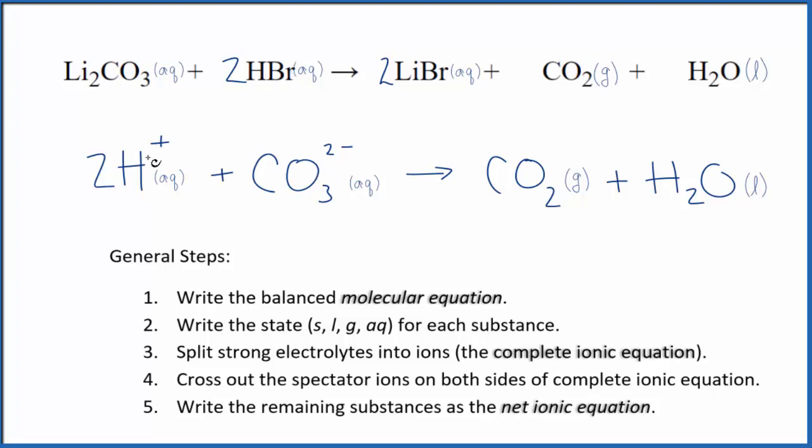You'll note that charge is conserved. Two times one plus, that's two plus. So that balances out this two minus. We have a net charge of zero. Over here, everything's neutral, net charge of zero. So charge is balanced. And if you count the atoms up, they're balanced as well.